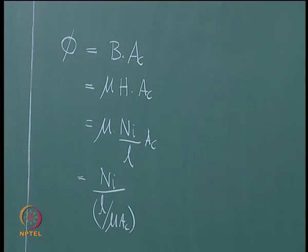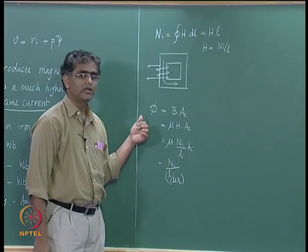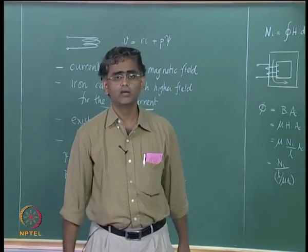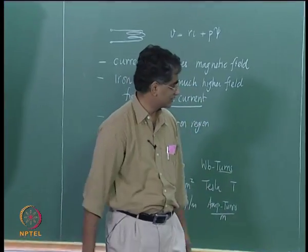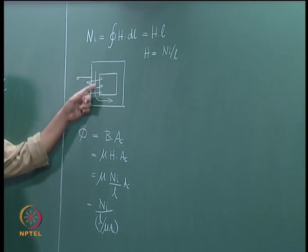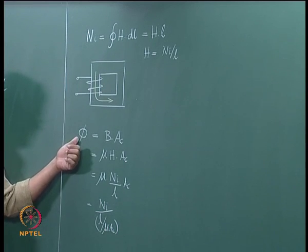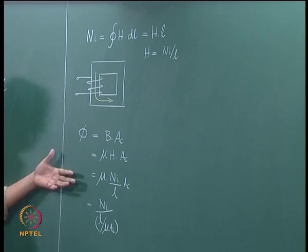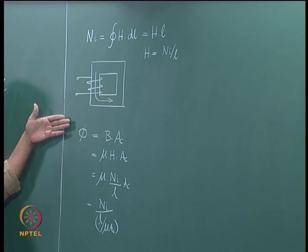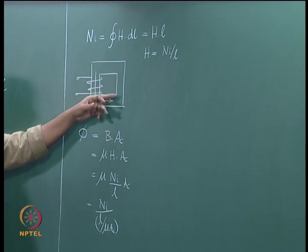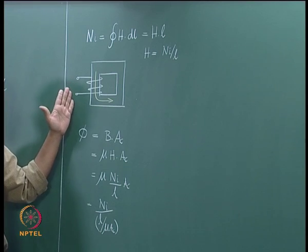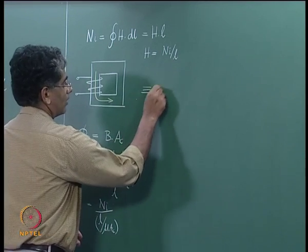If you had an electric circuit excited by an EMF E applied across a resistance R, then the loop current I is given by EMF divided by resistance. This looks very similar — you have something flowing around the loop which is φ, given by N·I divided by some number. This expression indicates that the electromagnetic system can be analyzed as an equivalent magnetic circuit, similar to an electric circuit.